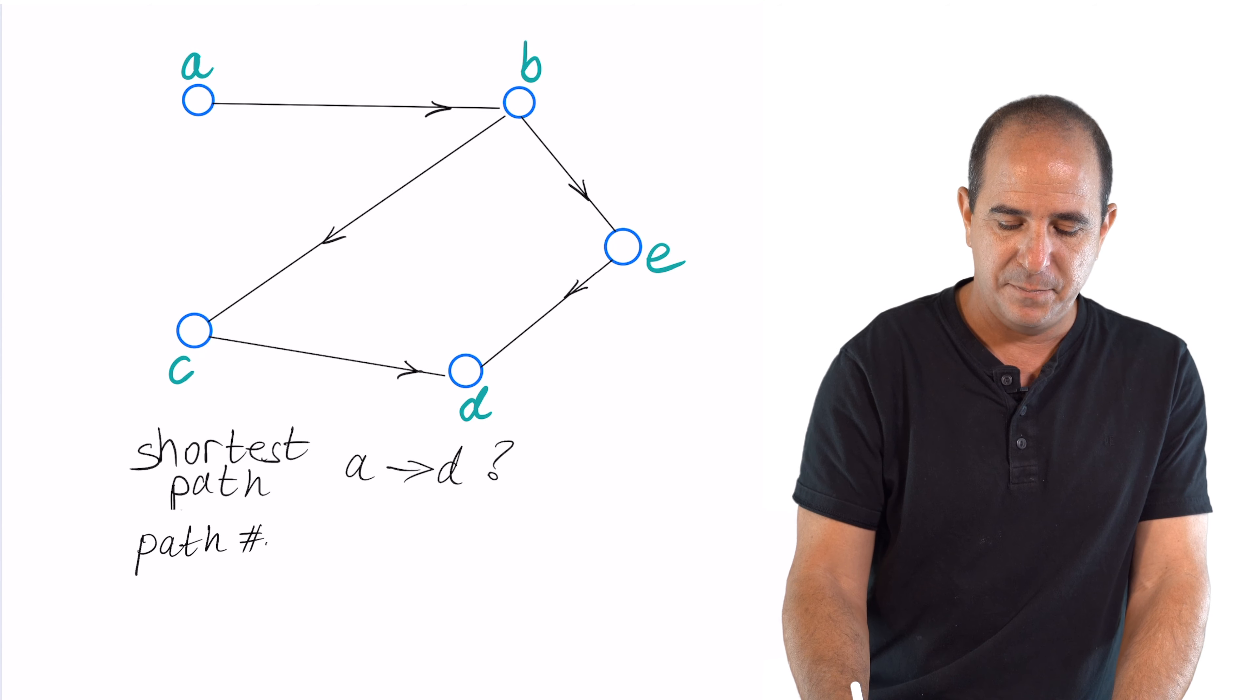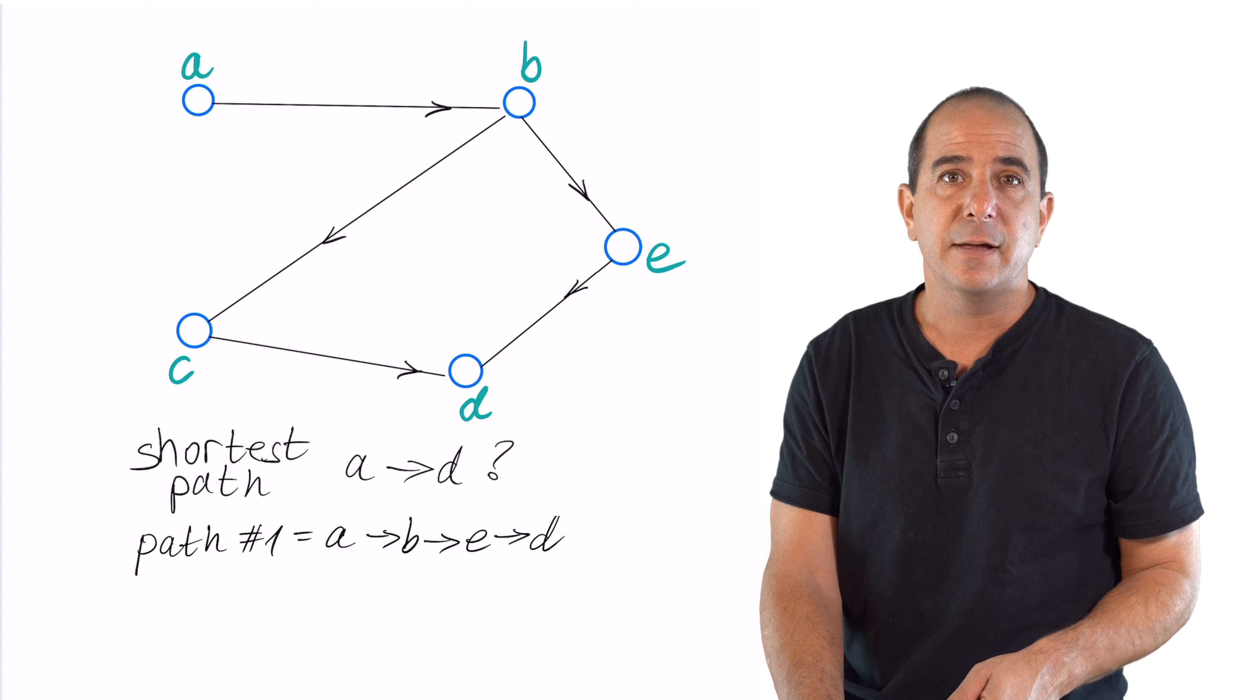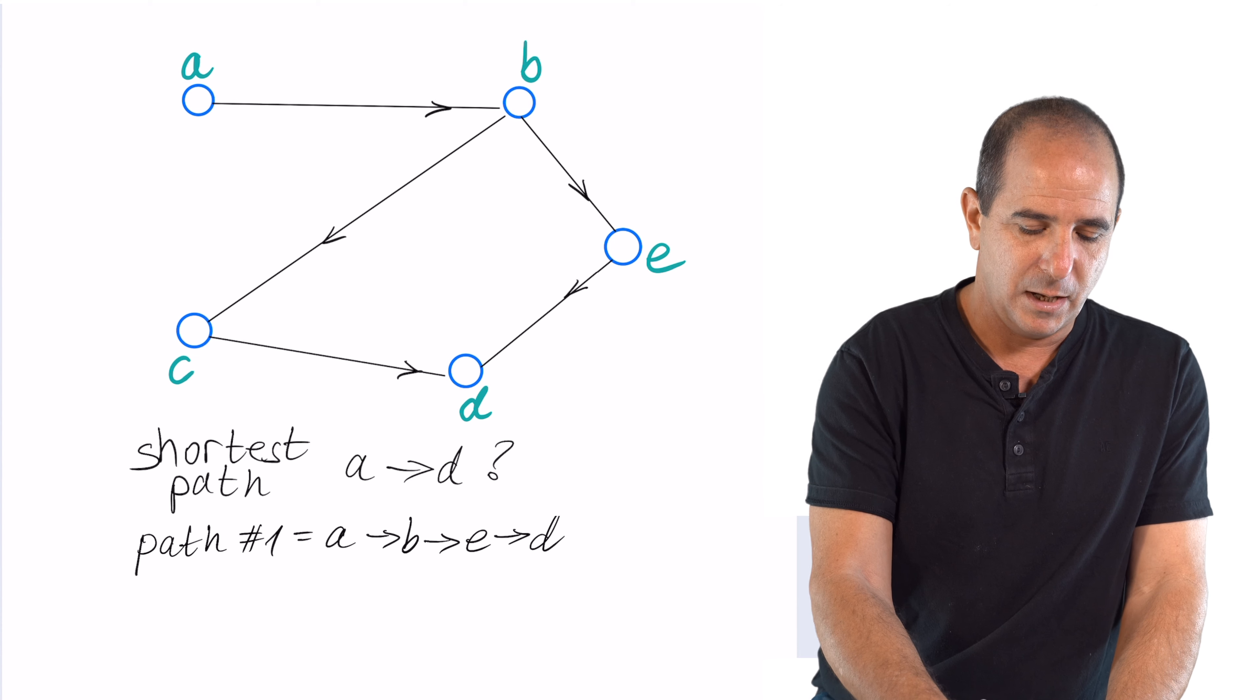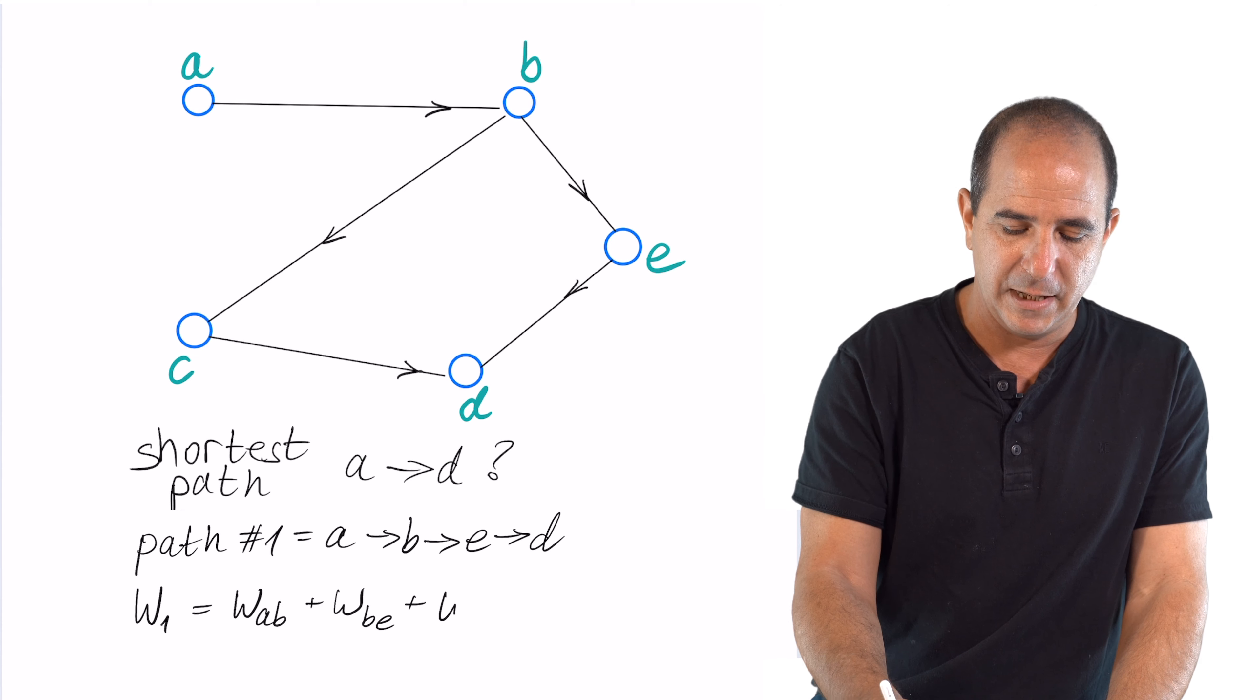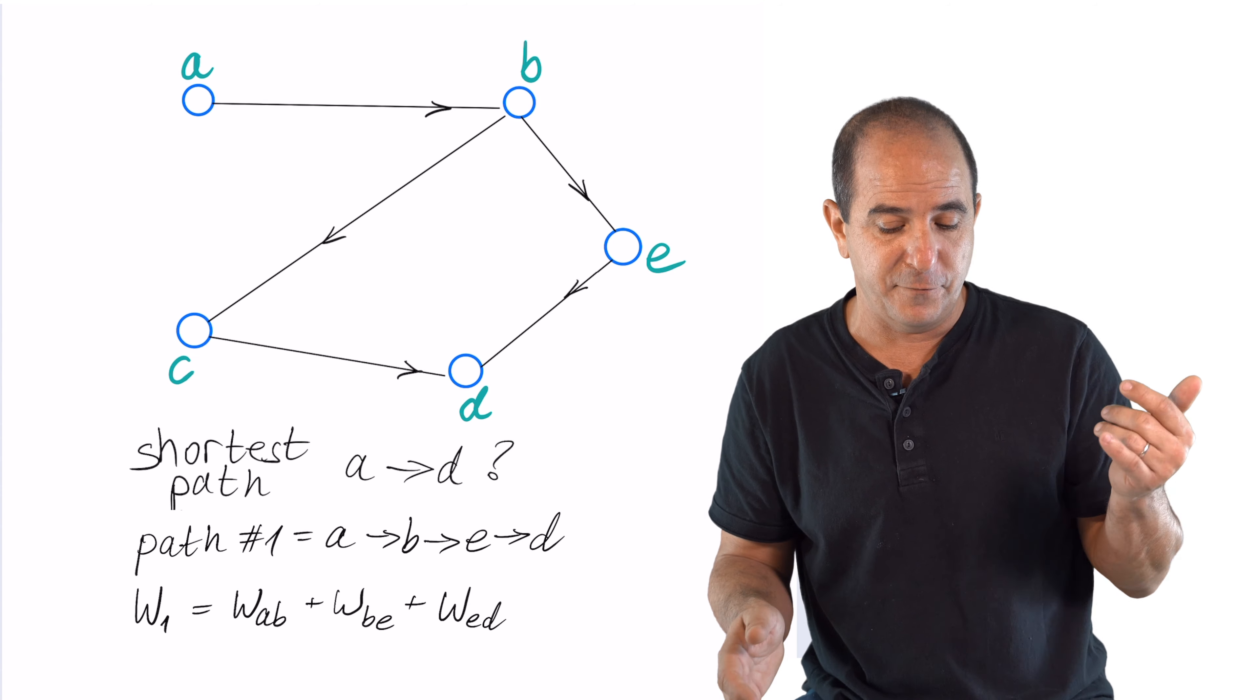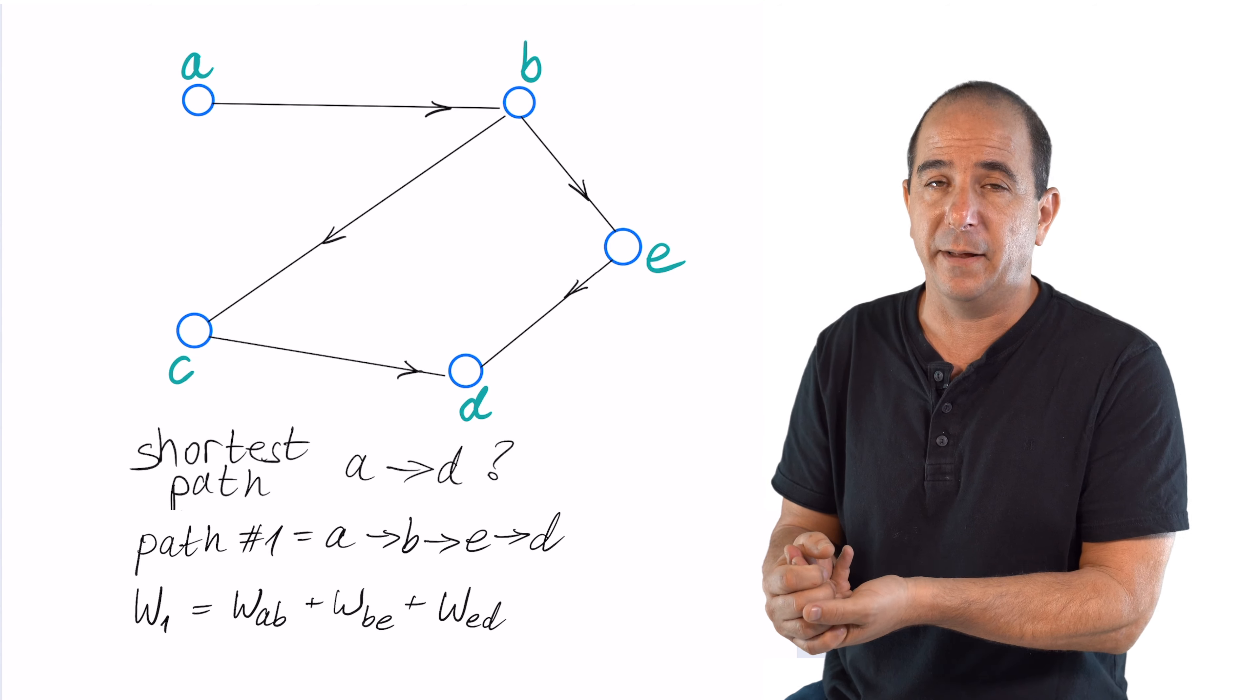So if I look at the path, say A, B, E, D, I can sum the set of weights associated with A to B, then B to E, and then E to D, and compare it to a different path, say A, B, C, D, and then find the shortest path.